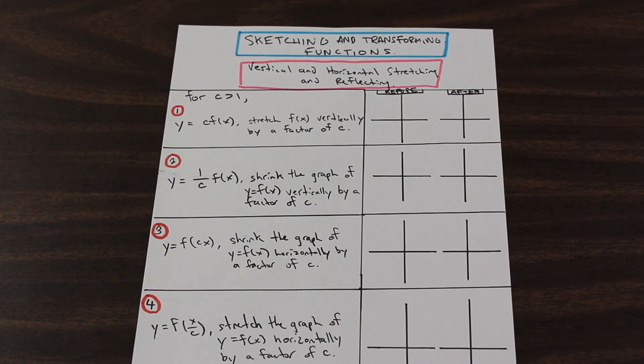We're going to look at all of the rules and what they do to the function, and on the right here, going to sketch you a little example of what happens when we apply different kind of transformations to different types of functions.